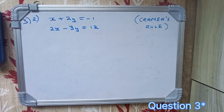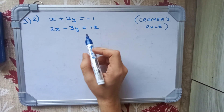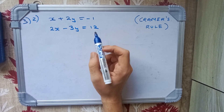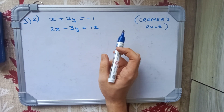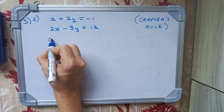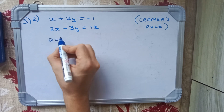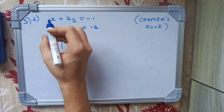Let's look at the next sum. We have x + 2y = -1 and 2x - 3y = 12. We will solve this by Cramer's Rule. First we find D.